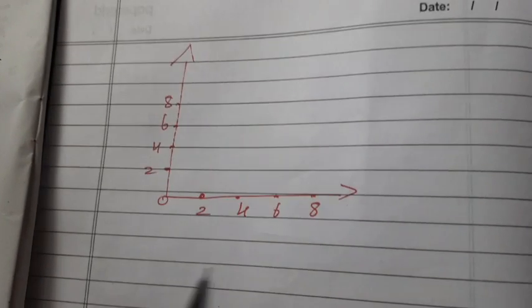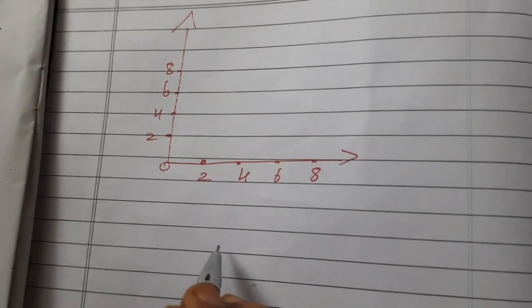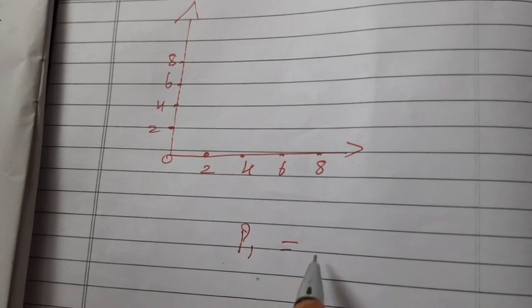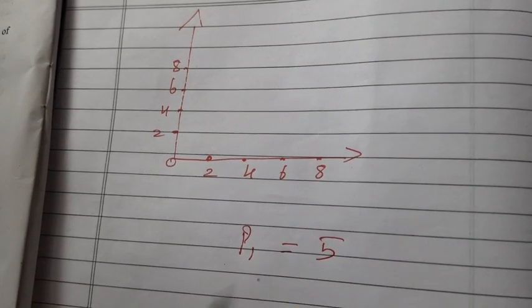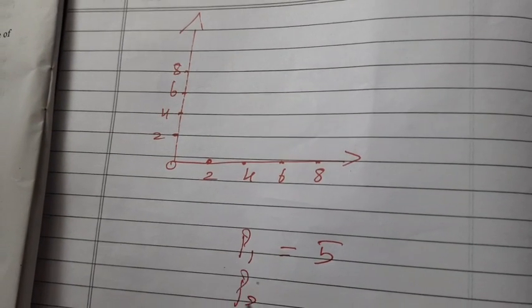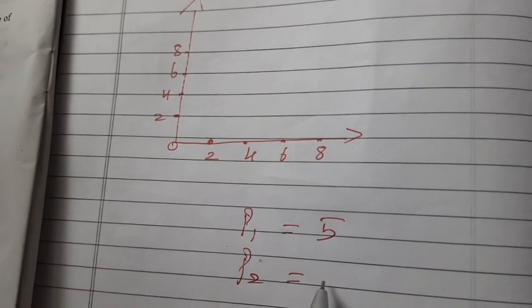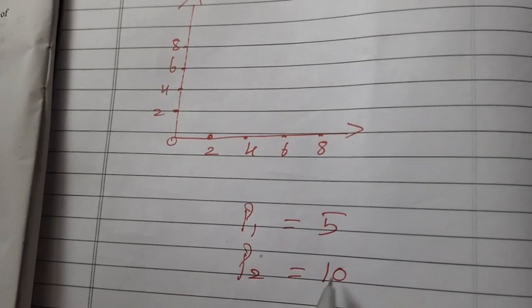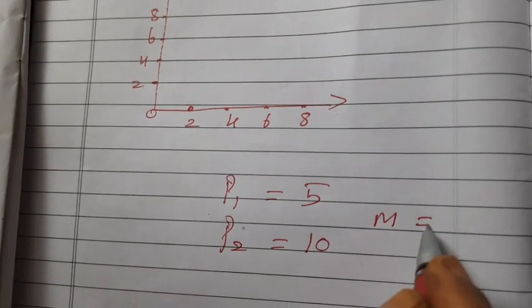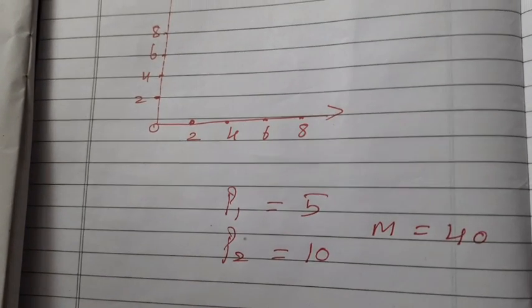Good one: the price of good one, P1, is equal to Rs.5. The price of good two, P2, is equal to Rs.10. The money income, M, is equal to Rs.40.